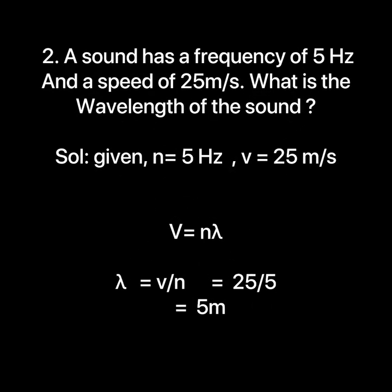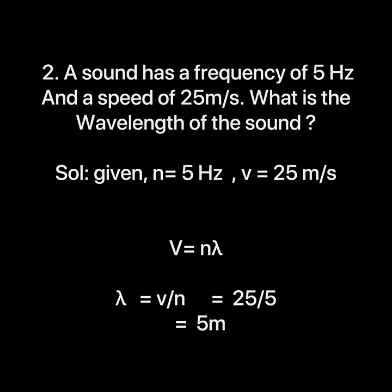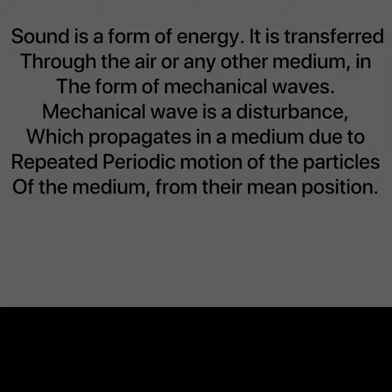Second problem: a sound has a frequency of 5 Hz and a speed of 25 meters per second. What is the wavelength? Given n = 5 Hz and v = 25 m/s, using v = n × λ, therefore λ = v ÷ n = 25 ÷ 5 = 5 meters. Therefore, wavelength = 5 meters.